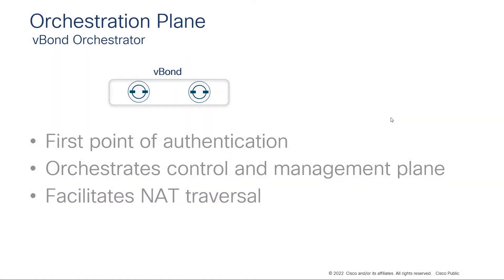The V-BON is a separate security-hardened virtual software component which has some very important functions. First, it is the first point of authentication into the SD-WAN overlay network. Next, it orchestrates the control and management plane for all SD-WAN devices. And last, it facilitates NAT traversal. So now let's look at each one of these functions in greater detail to see what this all means.